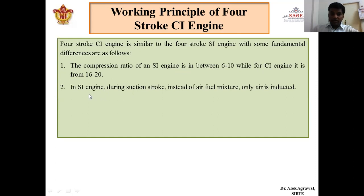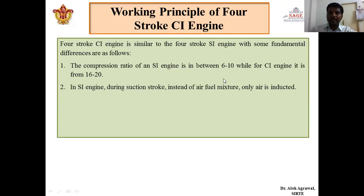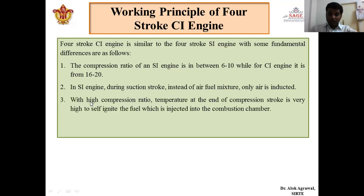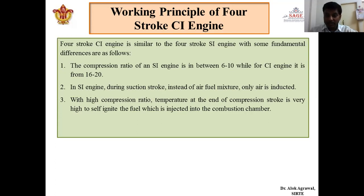The second basic difference is that in a spark ignition engine, during the suction stroke a fuel and air mixture is inducted into the combustion chamber, whereas in the case of a CI engine only air is inducted and fuel is injected through the fuel injector at the end of the compression stroke. With the high compression ratio of the CI engine, the temperature at the end of the compression stroke is very high, so the fuel gets sufficient temperature to self-ignite in the compression ignition engine and a spark plug is not required to initiate ignition.